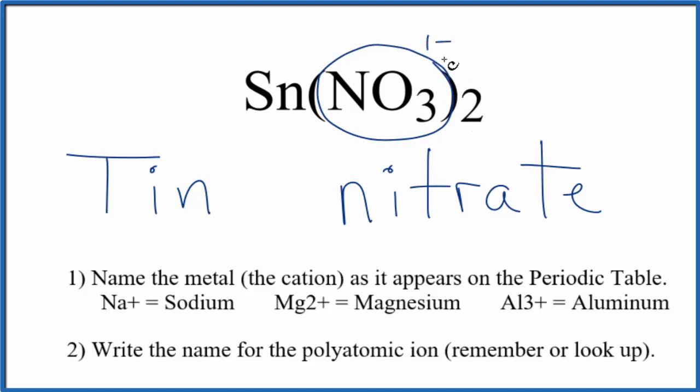Two times one minus, that's two minus. Tin has to be two plus for the charge to add up to zero, to have a net charge of zero.